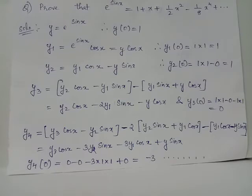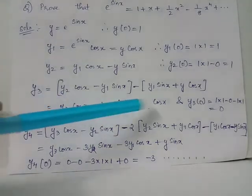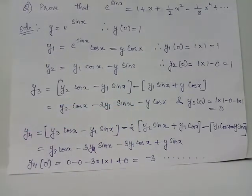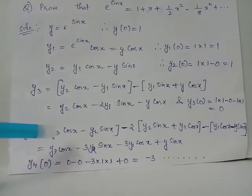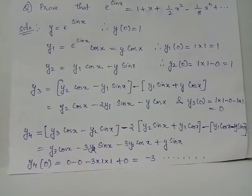y4 is the derivative of y3, obtained by application of the product rule to all three terms on the RHS of y3. This gives y4 equals y3 cos x minus 3y2 sin x minus 3y1 cos x plus y sin x. After simplifying, the value of y4 at x equals 0 is negative 3.